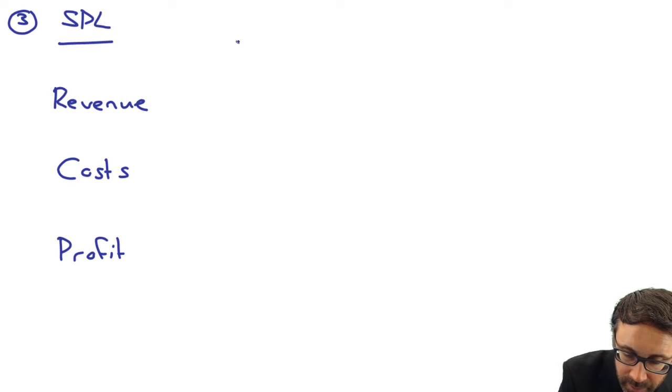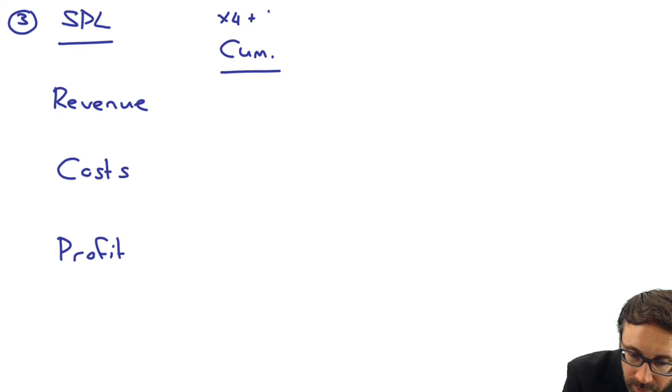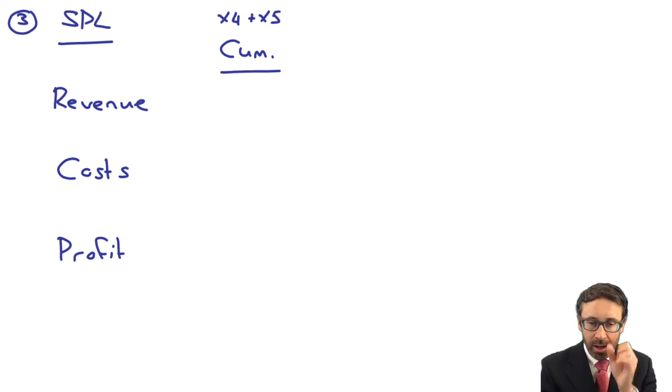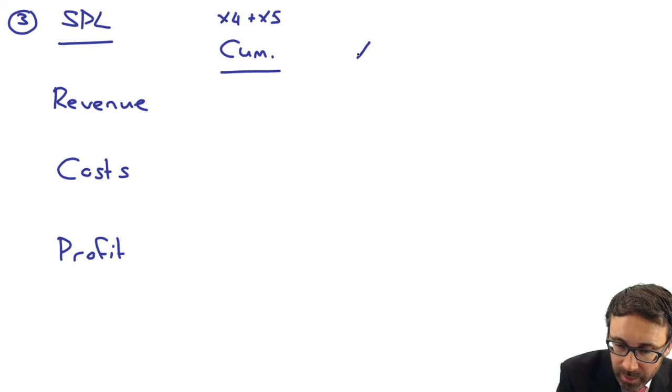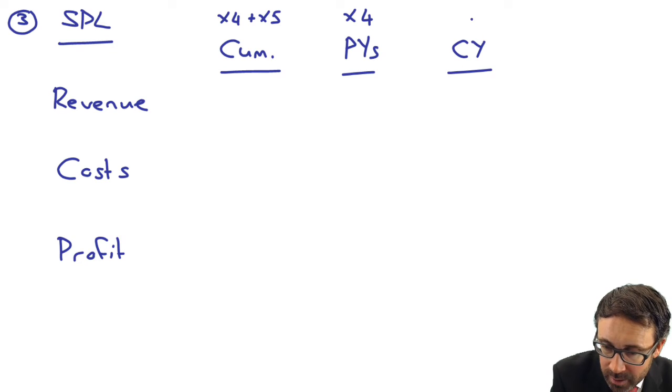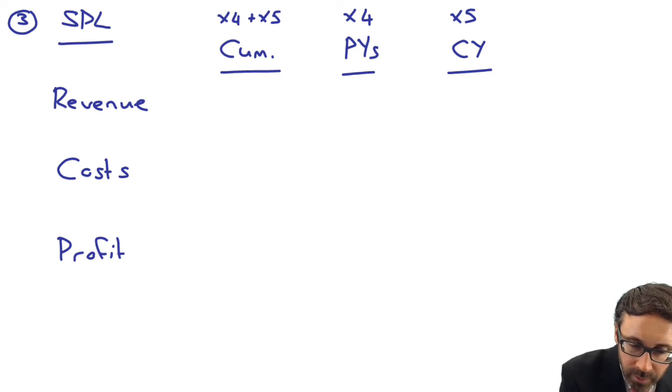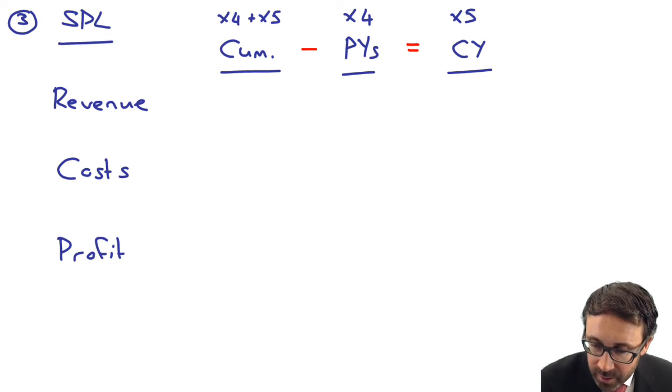And what I would do there is I would look at it cumulatively. So at this point in time, so effectively, that's looking cumulatively for X4 and X5, isn't it? I'd then go through and have a look at what's happened in previous years. So here, that's looking at what's happened in X4. And then I can look at the current year, which is X5, because what I'm going to have to go through and do is when I've got the cumulative figures, I'm then going to have to deduct what there's been in prior years to get me to my current year figure, which is then what appears on the statement of profit or loss.